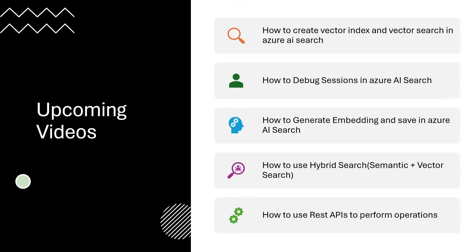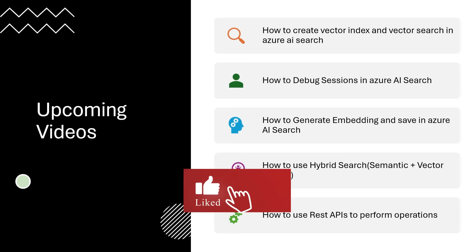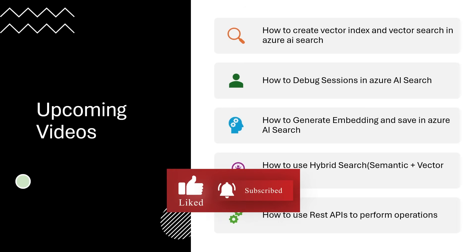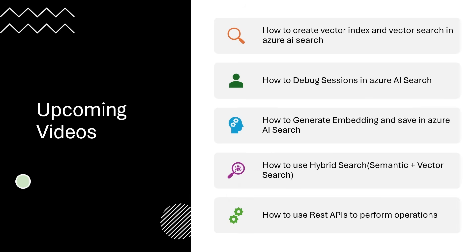Then we are going to create a few more videos where we will create vector indexes and vector search, because nowadays we mostly use vector index and vector search when we want a chat-with-data scenario with chatbots. We are also going to see how we can generate embeddings with the help of OpenAI services or other AI services, and how we can use hybrid search and REST API to perform operations.